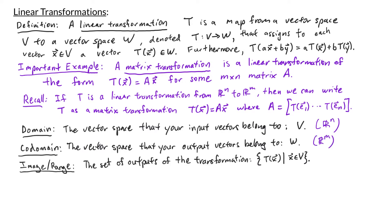Next we have the image, or the range, of the transformation. This is just the set of all outputs from your transformation. In set notation, this is the collection of all T of x's for every x in V. If you're working with a matrix transformation, this is sometimes referred to as the column space. One thing to remember is that your image or range is always a subset of your codomain.